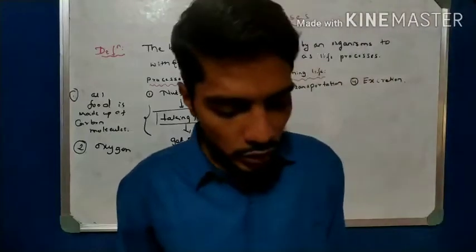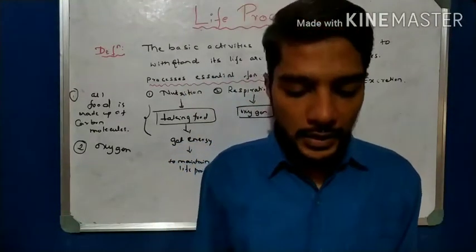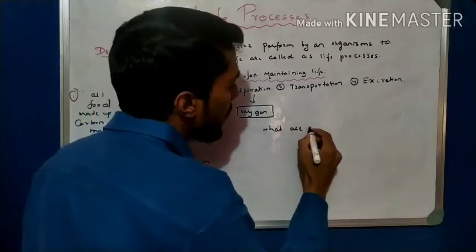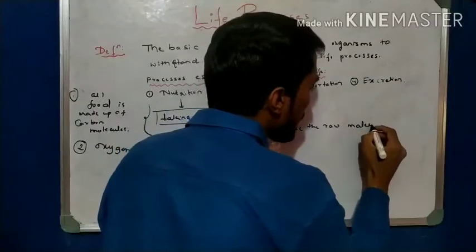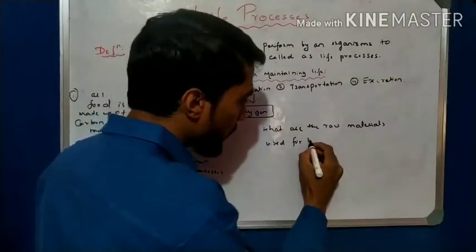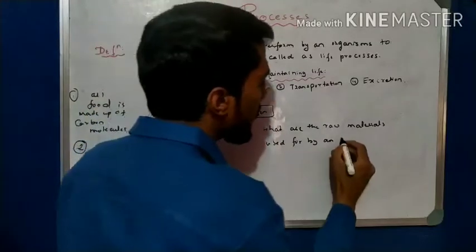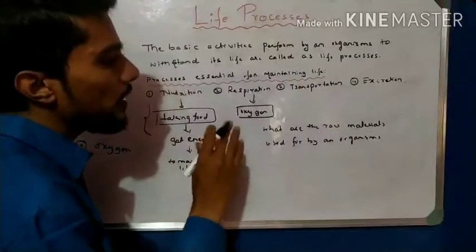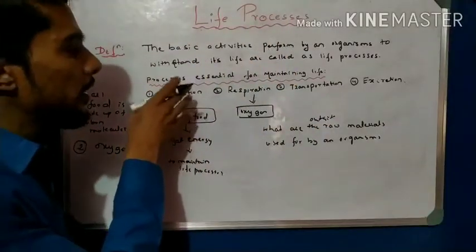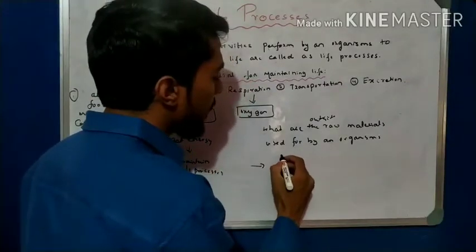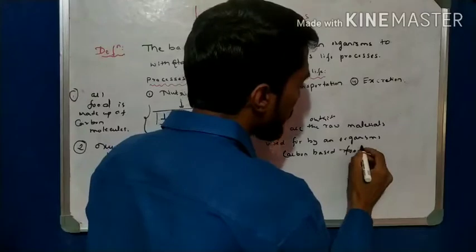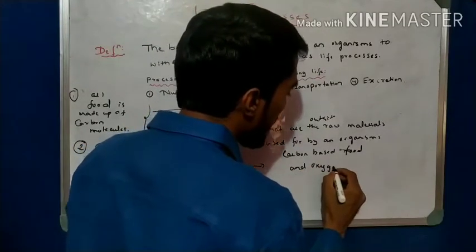In the question paper, a question is asked: what are the raw materials used by an organism? The answer is: the outside raw materials used by organisms for the completion of the nutrition process are carbon-based food and oxygen. This is a very important answer.